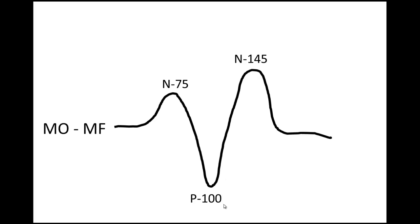When looking at a visual evoked potential, the most important deflection is the P100. You look at the morphology of the P100, the latency, and the amplitude. The latency is measured as the distance between the point of stimulation and the point of recording of P100 — whether it is 100 ms, 102 ms, or 120 ms. In our lab, if the absolute latency of P100 is more than 112 ms, we consider it abnormal.